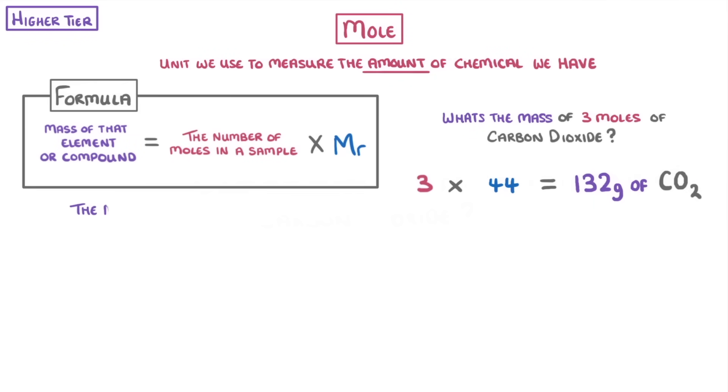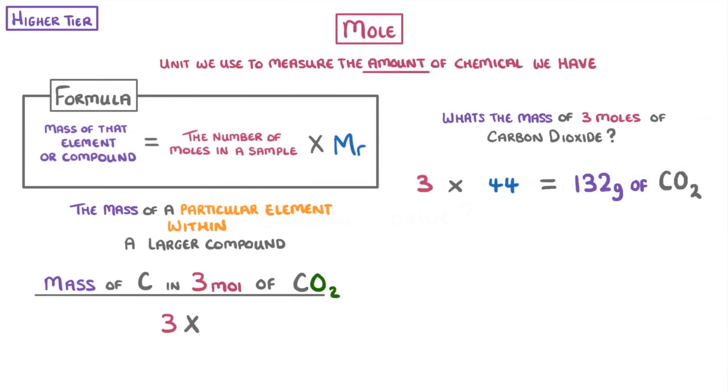We can also work out the mass of a particular element within a larger compound, like the mass of carbon in 3 moles of CO2. For this, all we do is take the number of moles, which is 3, and multiply it by the MR of the carbon, which is 12. So 3 times 12, which gives us 36 grams of carbon in our 132 grams of CO2.